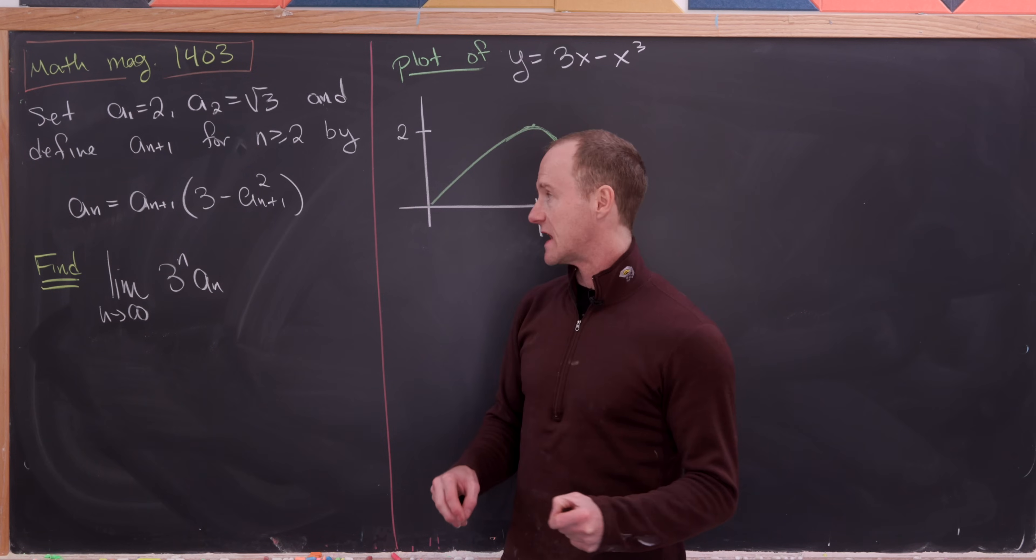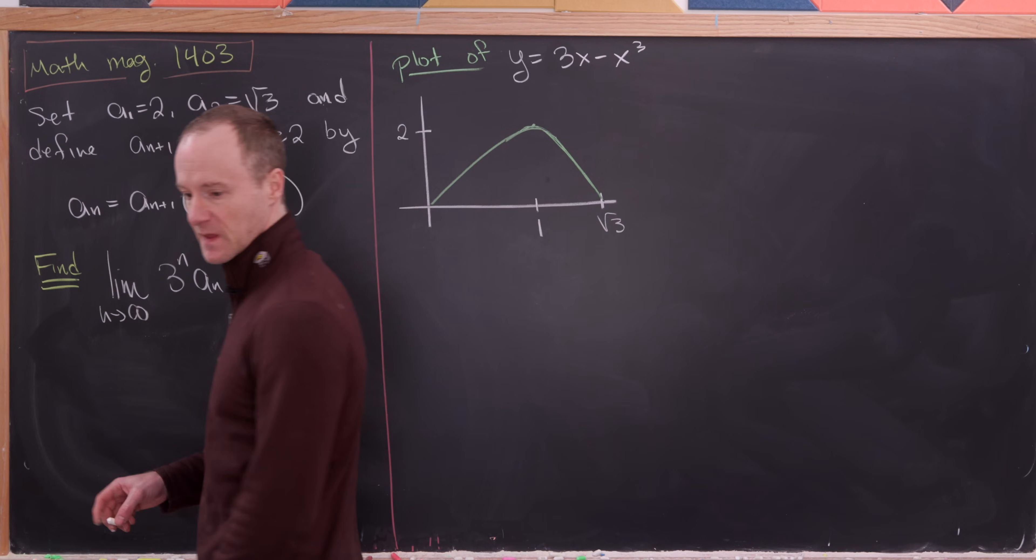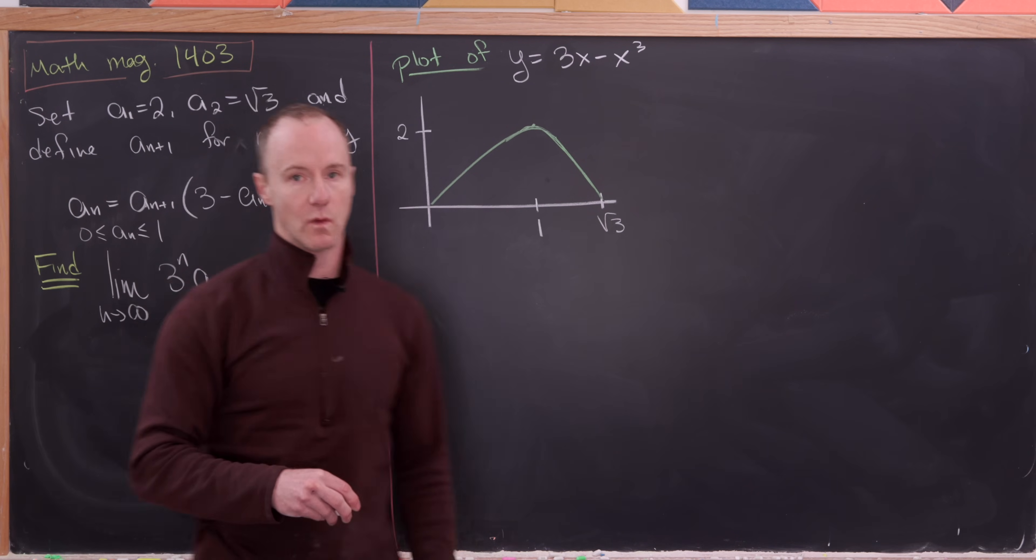So we have a_n equals a_n+1 times 3 minus a_n+1 squared. And let's include one more thing here and let's force a_n to be between 0 and 1.